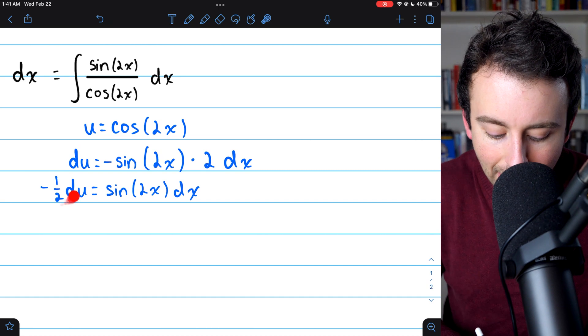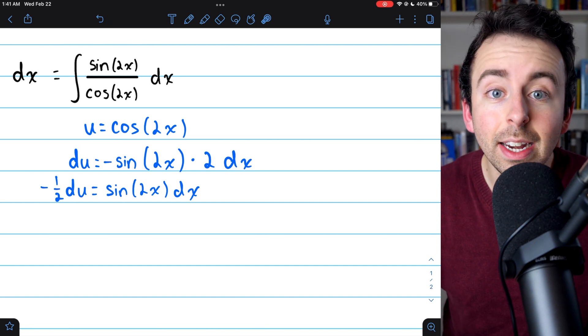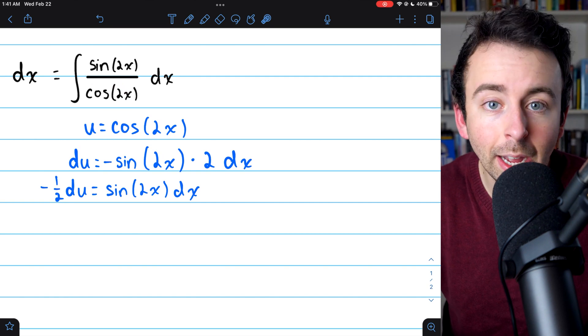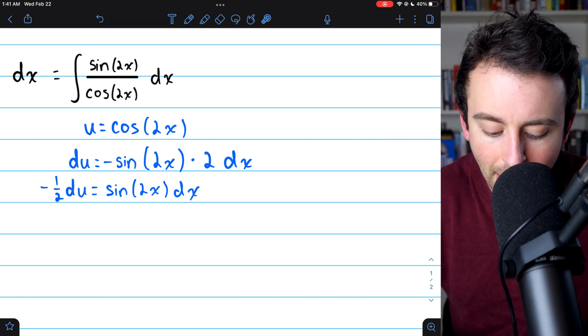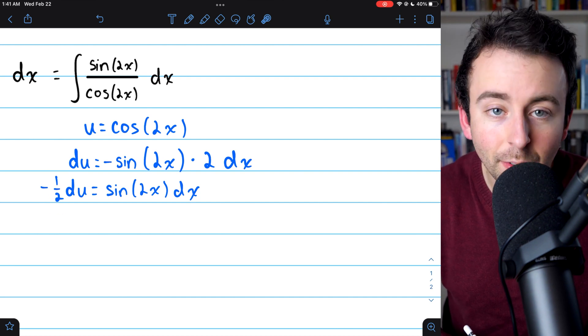And then we have negative half du equals sine of 2x dx. Now, we can replace cosine of 2x in the denominator with u, and we can replace sine of 2x dx with negative half du.